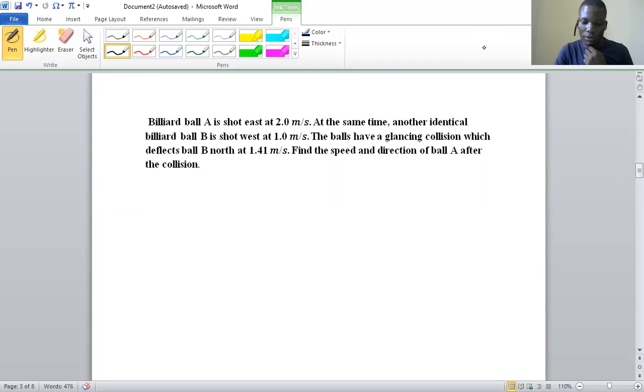The balls have a glancing collision which deflects ball B north at 1.41 m/s. Find the speed and direction of ball A after the collision.